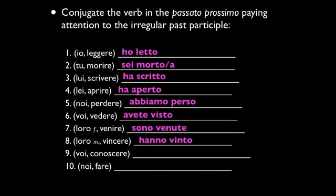Nine: VOI CONOSCERE — that's AVETE CONOSCIUTO. And ten: NOI FARE — ABBIAMO FATTO. And that's all from there. Obviously you can do a lot more work with those, but for this video I think you have the point. If not, watch it again.